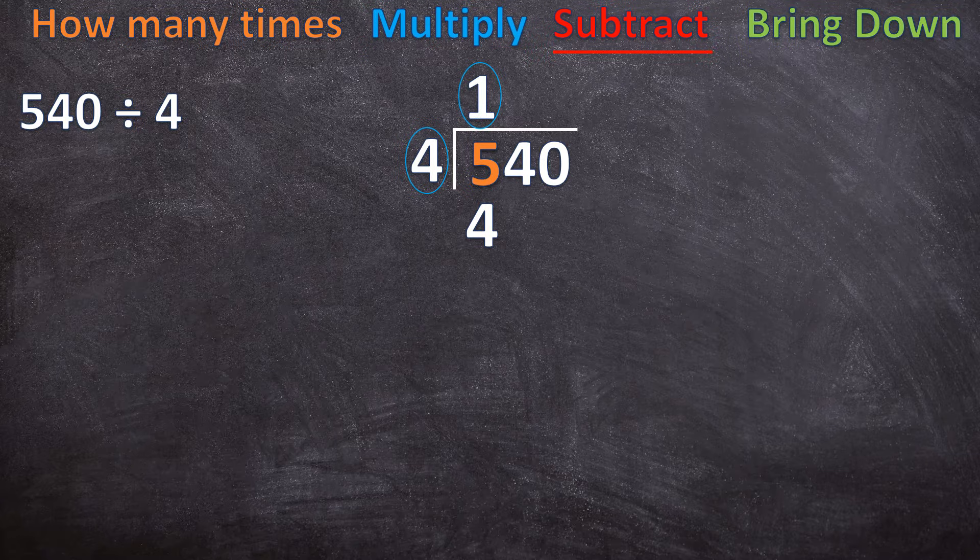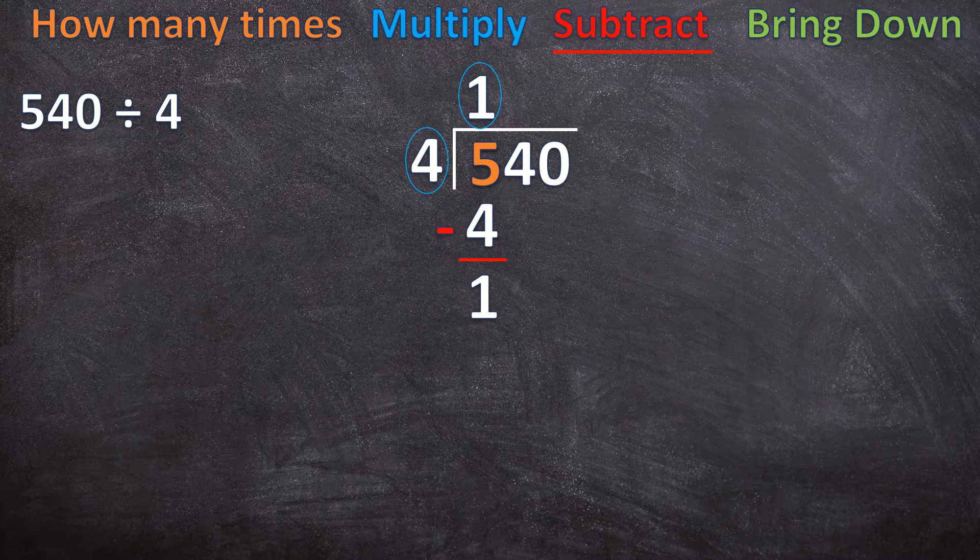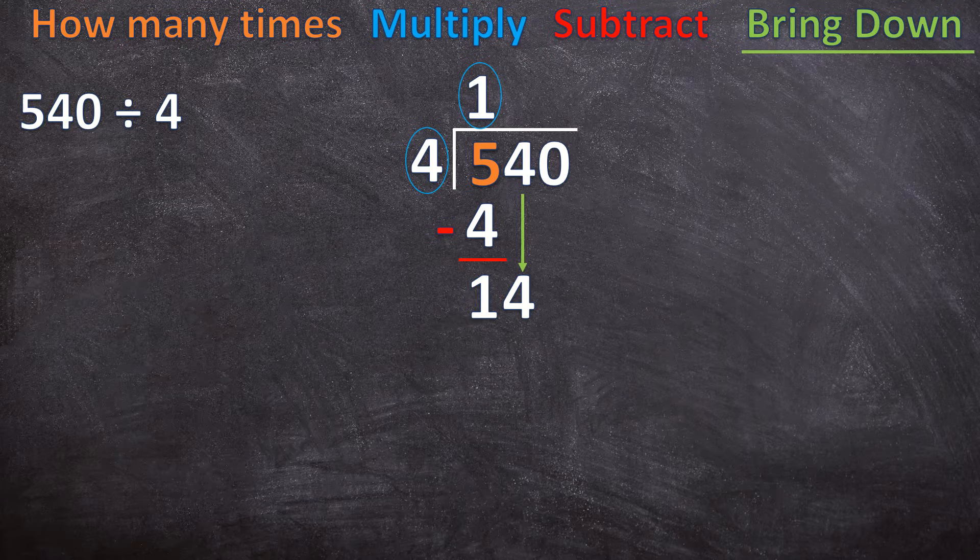Now we move on to the next step, subtract. Now we say, what is five minus four? Five minus four is one. And now the last thing we do is we move on to the next number. Like I said, we go from left to right. The next one is four, and we bring the four down.